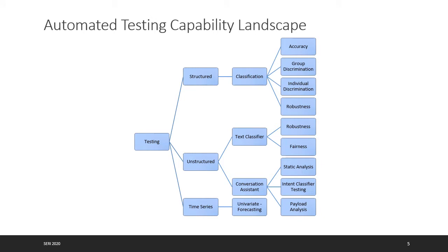Our work in IBM Research on testing is mostly about automated testing capabilities, where we automatically generate new test cases to test various models and their various properties. We cover three modalities: structured data (tabular), unstructured text data, and time series. For structured data, we consider classifier models and forecasting models. The properties we consider include accuracy, fairness, and robustness. This is the entire landscape of techniques we have developed, which is very different from existing literature that mostly focuses on image testing and robustness.